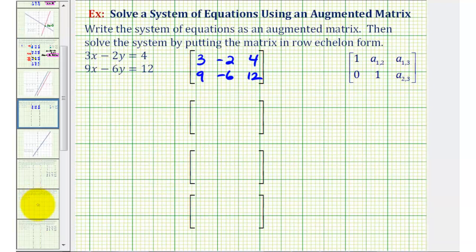Going back to our example, we first want to focus on obtaining a zero in row two, column one. To do this, we want the terms in this column to be opposites, so we can then add the two rows together. Since we have a positive 9 here, we want this 3 to be a negative 9, which means our first step is going to be to replace row one with -3 times row one.